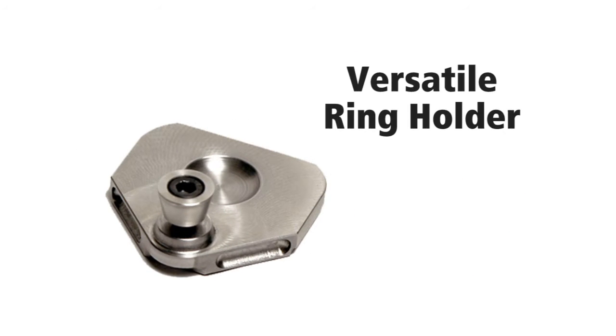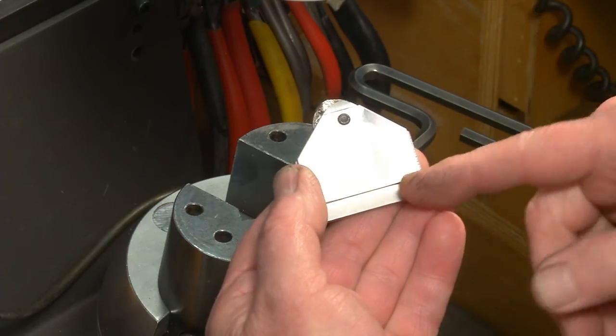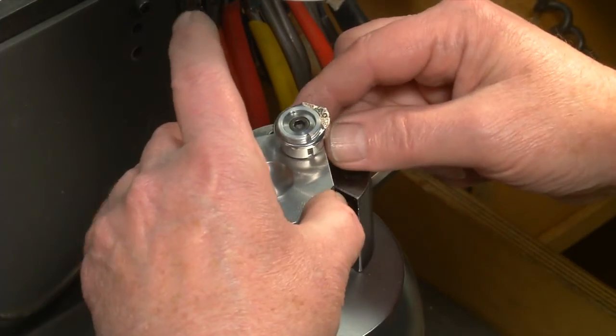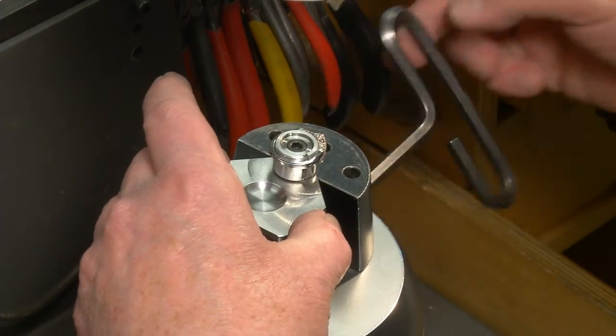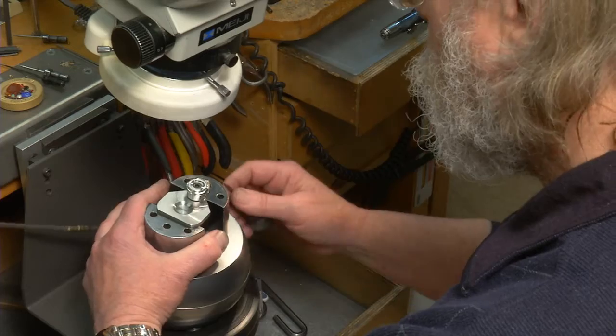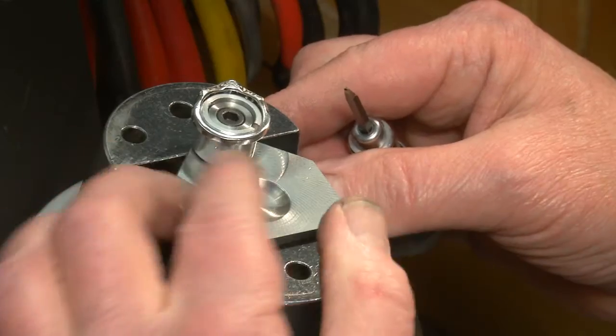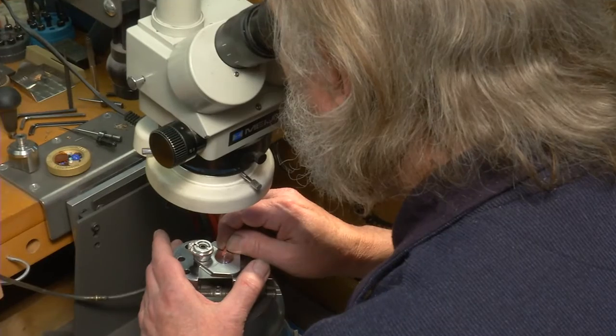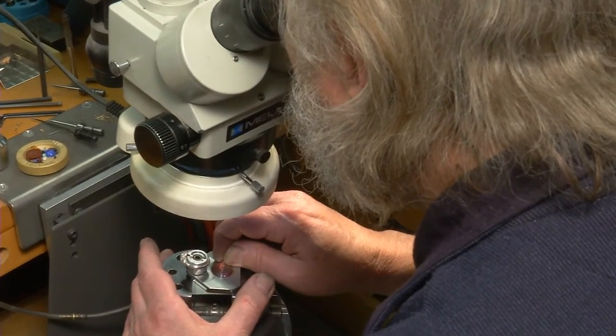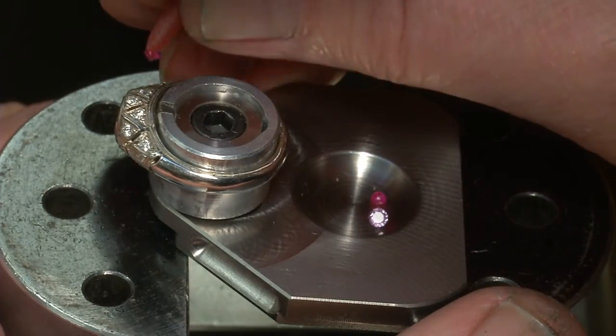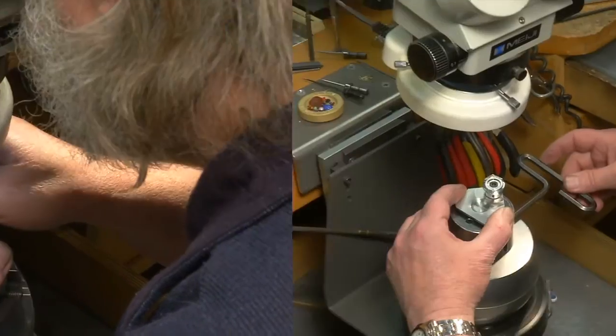Now, let's examine the versatile ring holder. Grooves along the bottom allow for easy secure mounting in a vise. Horizontal mounting like this allows us to work on the sides of the ring for such tasks as engraving with 360 degree access. For stone setting, we can easily access gems in the central gem tray without ever taking our eyes from the scope.